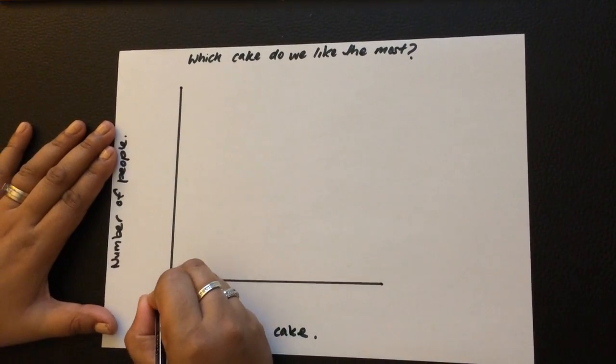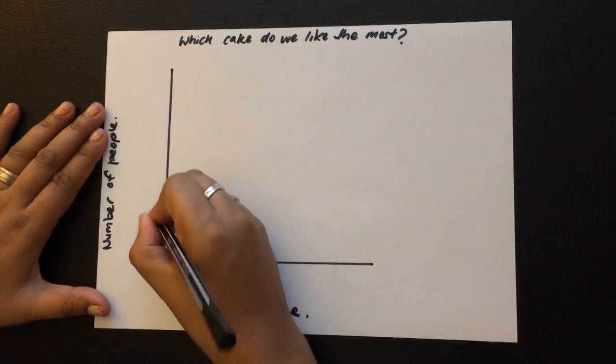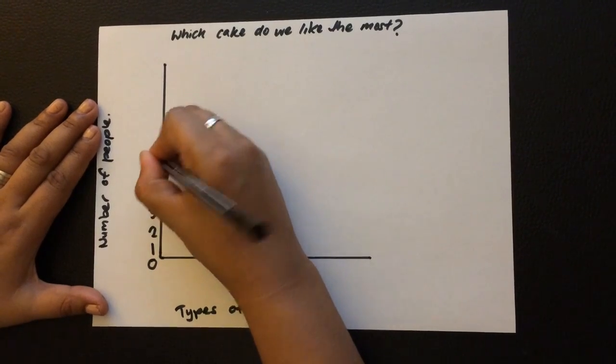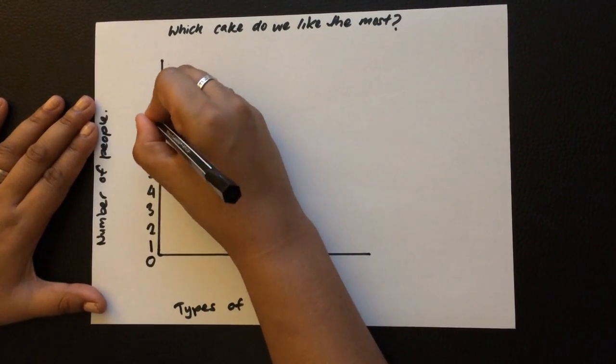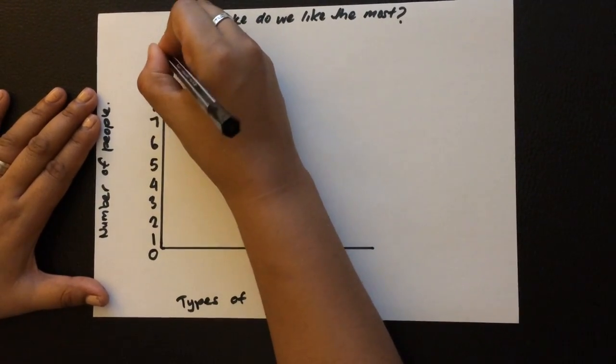So I would start from zero on the corner and then 1, 2, 3, 4, 5, 6, 7, 8, 9, 10 and 11 on the top.